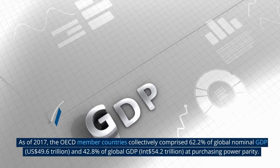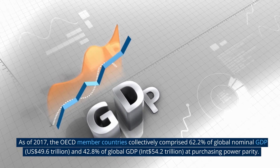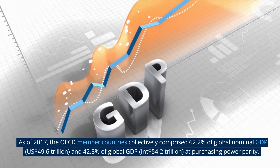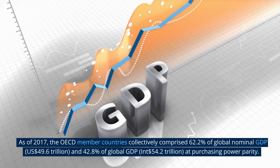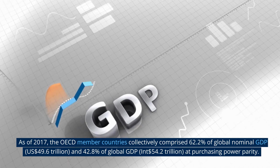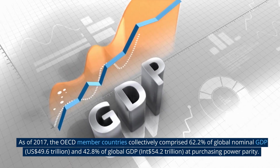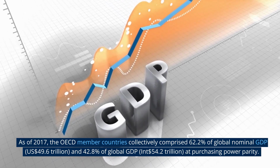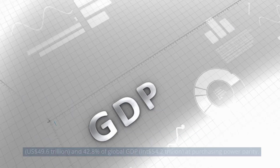As of 2017, the OECD member countries collectively comprised 62.2% of global nominal GDP, $49.6 trillion United States dollars, and 42.8% of global GDP, $54.2 trillion, at purchasing power parity.